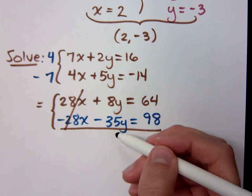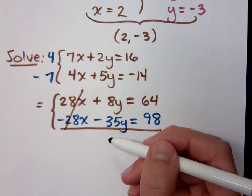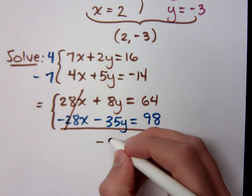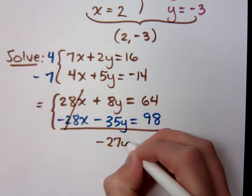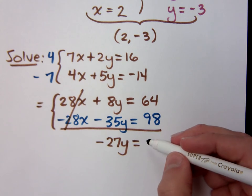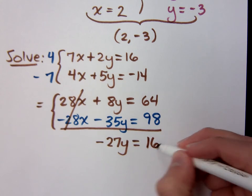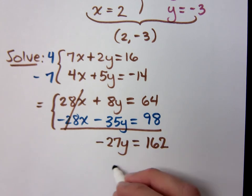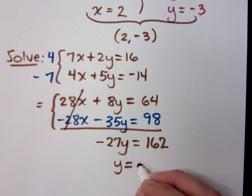How much Y do I have? Negative 27Y equals what? 162. Well, we should give up now, right? This is just impossible. Oh, it works out? Divide by negative 27, so Y equals negative 6. What am I going to do with that?